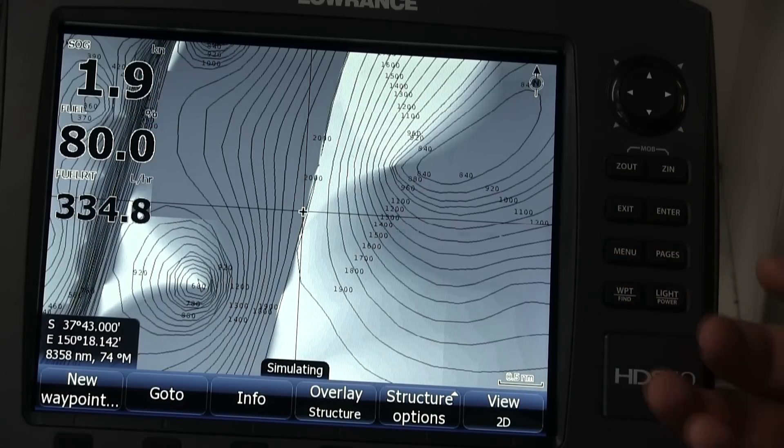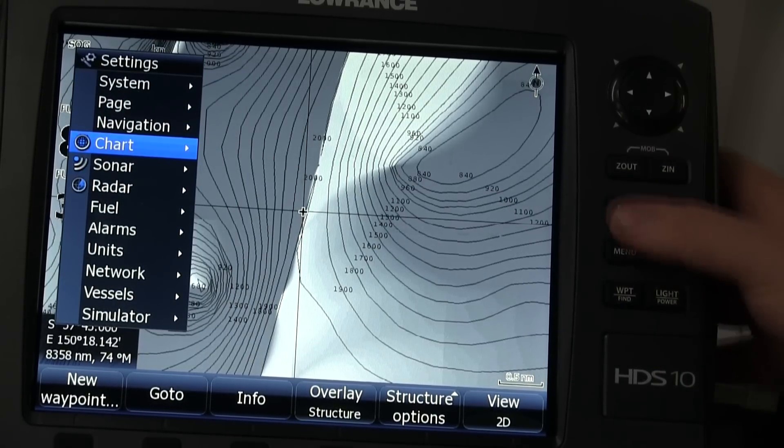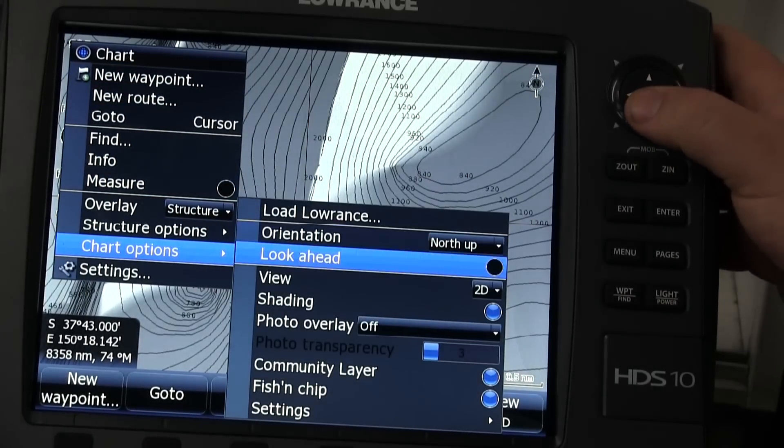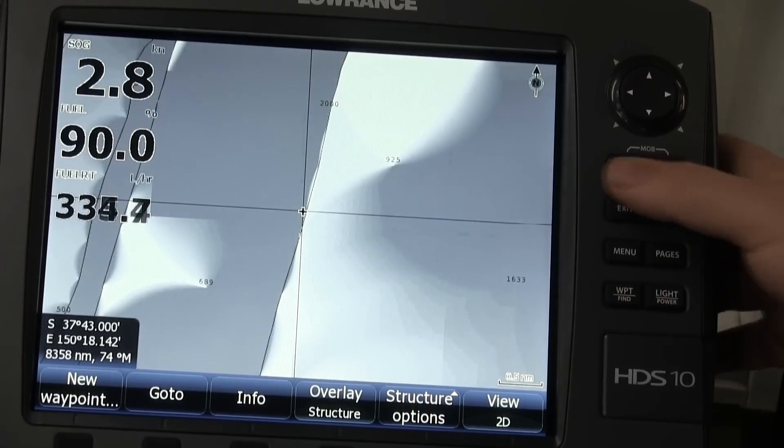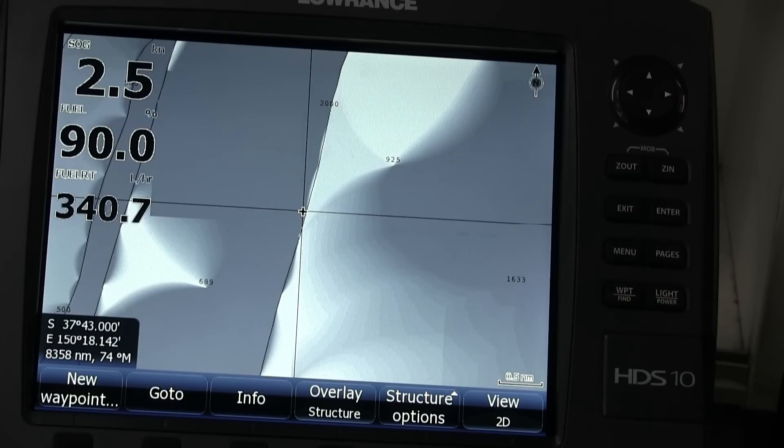Just so you get a comparison, I'm going to switch off the fish and chip data so you can see how it looks normally. So that's with the standard data, immediately you can see a difference. Obviously, it doesn't show as much information as what you can see with it.